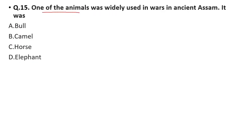Question 15: One animal was widely used in wars in ancient Assam. Options: bull, camel, horse, or elephant. The correct answer is option D, elephant, which was widely used in wars in ancient Assam. Those were the best 15 questions of today.